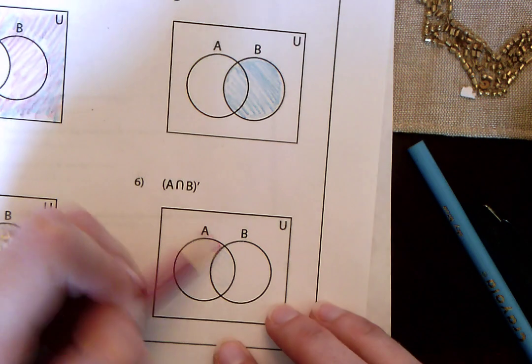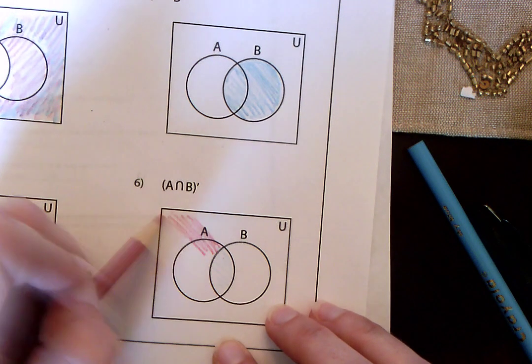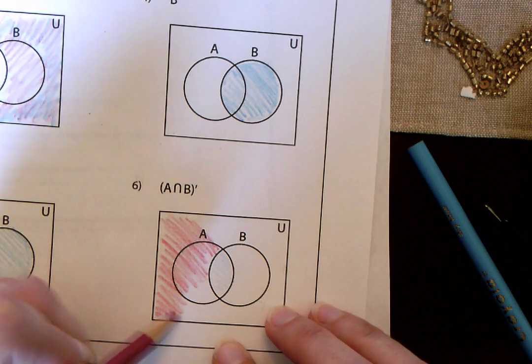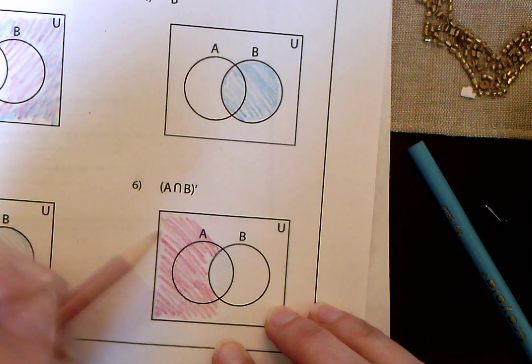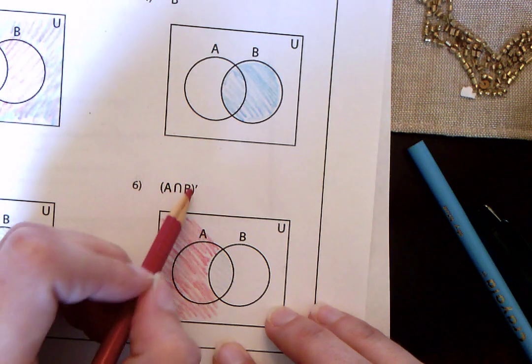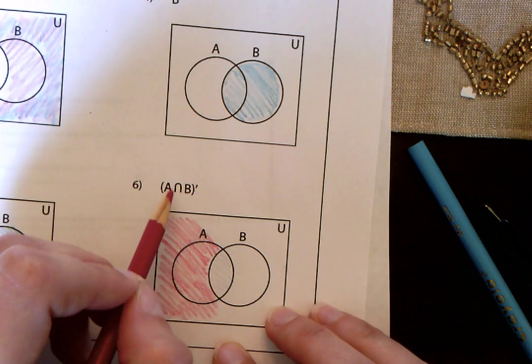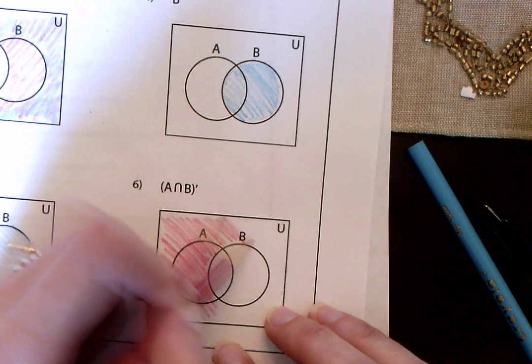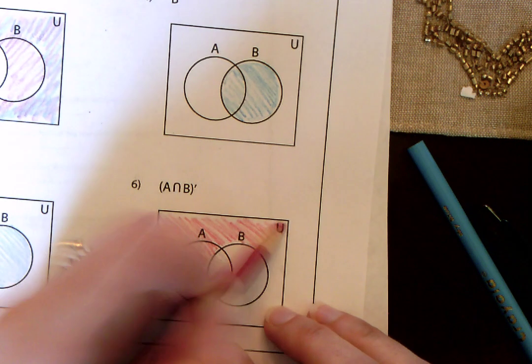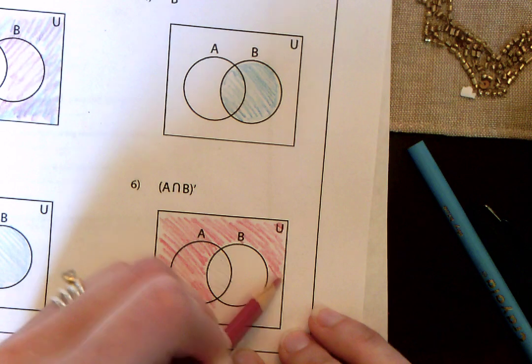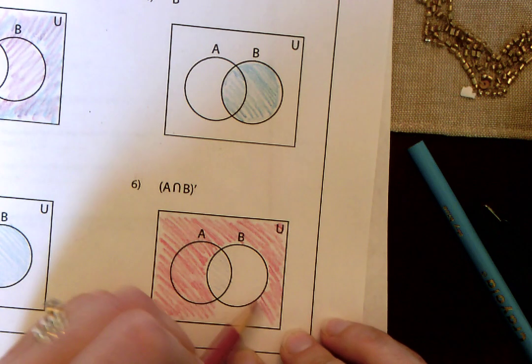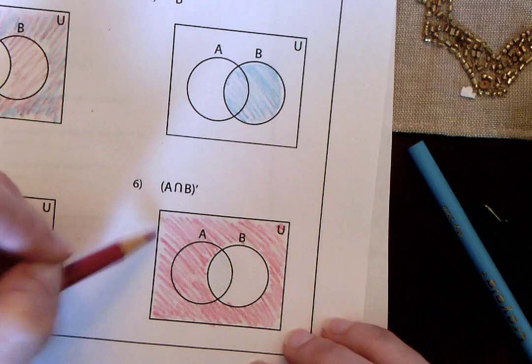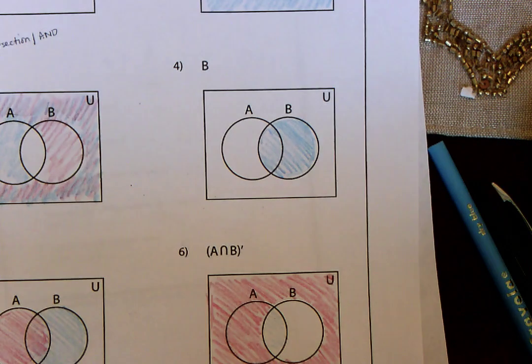So that would be all of this outside. All the place where I'm shading red. That's my answer. It's everything that's not. This is the little symbol for not. Everything red. So I hope that makes sense.